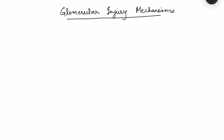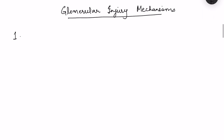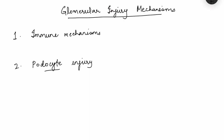The mechanisms causing glomerular injury determine whether a patient presents with nephrotic syndrome, nephritic syndrome, or a mixed condition. The first and most important mechanism is immune-mediated injury. The second is podocyte injury — specifically to the foot processes. The third is nephron loss, which obviously reduces filtration.